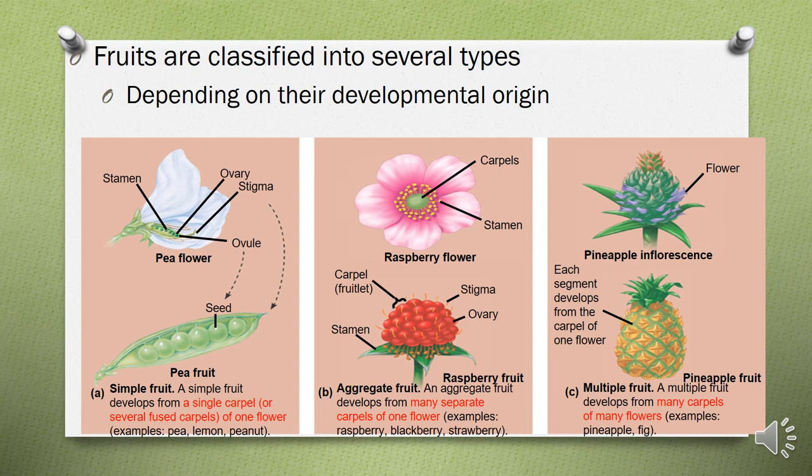Fruits are classified into several types depending on their developmental origin. There are three types: simple fruit, developed from a single carpel or several fused carpels of one flower; aggregate fruit, developed from many separate carpels from one flower; and multiple fruit, developed from many carpels of many flowers. Examples of each type are given on this slide.